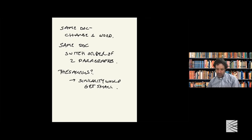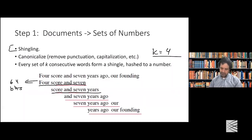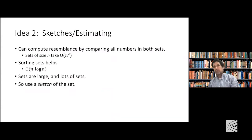So if we use a thesaurus the similarity gets small — what we're tracking is syntactic similarity. Given this approach, you could compute the resemblance of two sets by comparing all the numbers in both sets. If the sets are roughly of size n, computing the resemblance would take order n-squared steps. You could sort the sets in n log n time and then do a linear walkthrough to find how many things are equal.